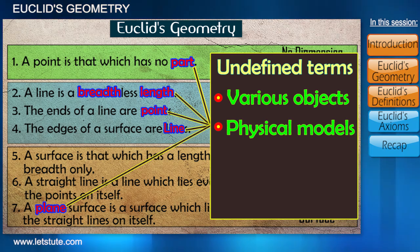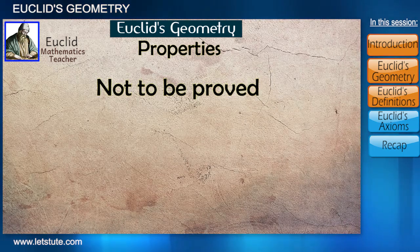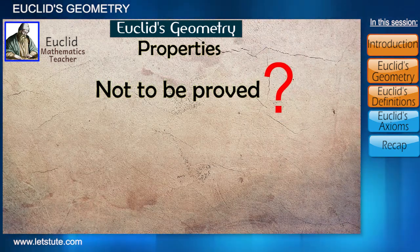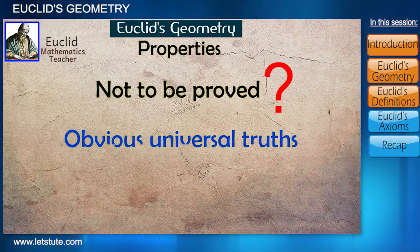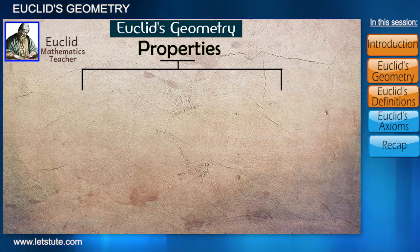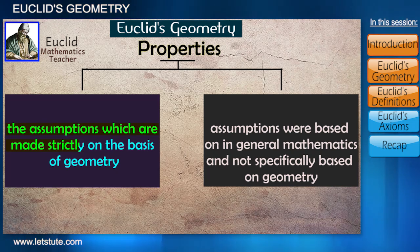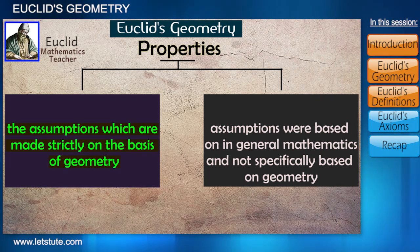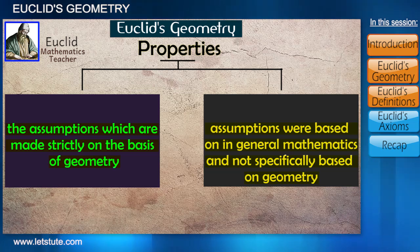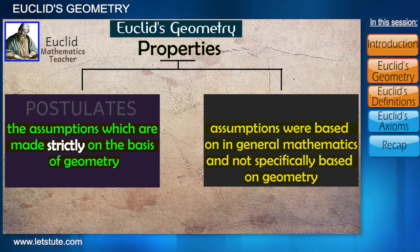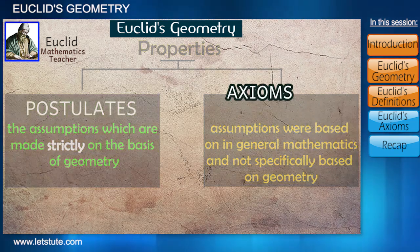After these definitions, Euclid assumed some properties which were not to be proved. You may ask why we need proof for almost everything in geometry but not for these — it's because they were obvious universal truths. He divided these properties into two types: one where assumptions were made strictly on the basis of geometry, and another where assumptions were based on general mathematics. The strictly geometry-based ones are named postulates and the others are known as axioms.